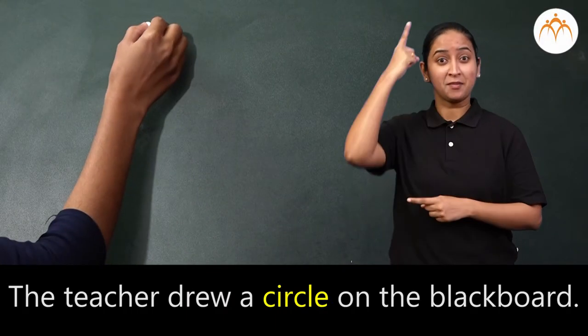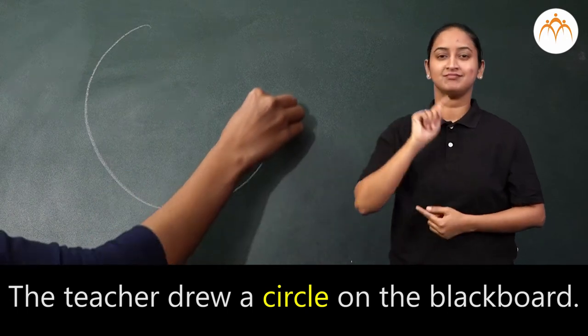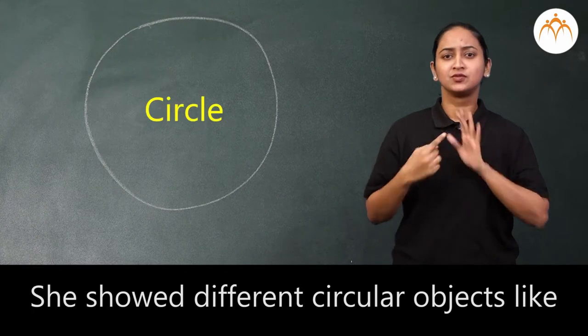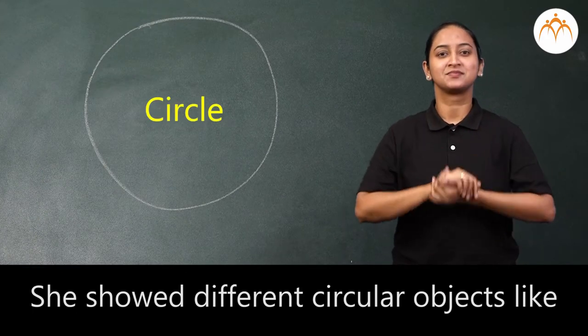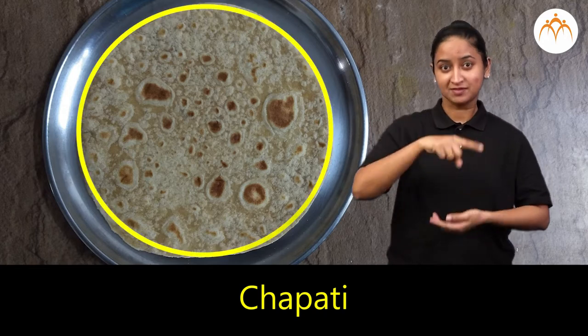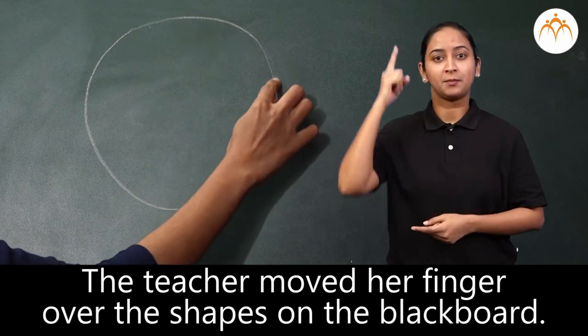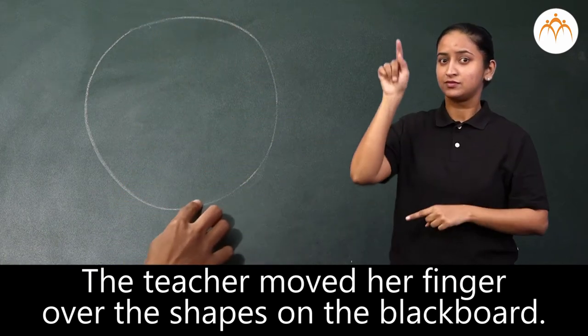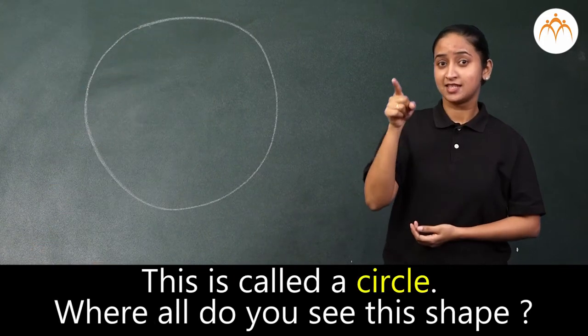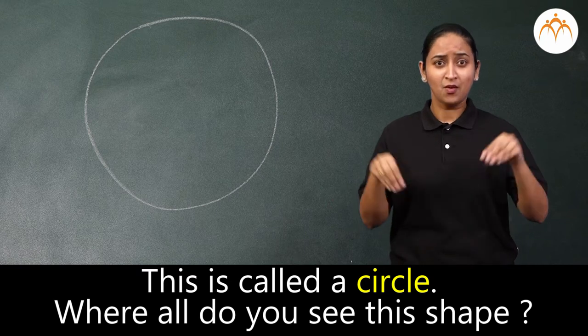The teacher drew a circle on the blackboard. She showed different circular objects like bangle, chapati and bhakri. The teacher moved her finger over the shapes on the blackboard. This is called a circle. Where all do you see this shape?